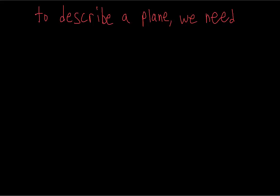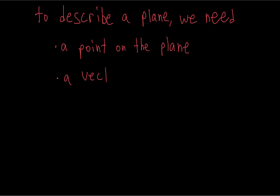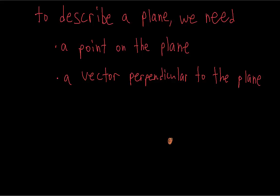Because, as we're going to see, planes have a linear equation as well. To describe any plane, we need two things: a point on the plane — any point — and then any vector perpendicular to the plane. If you are given these two things, a point on the plane and any vector perpendicular to it, then there is only one plane that you can draw. These two things completely describe the plane.